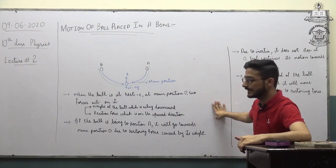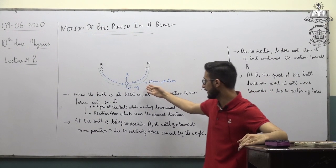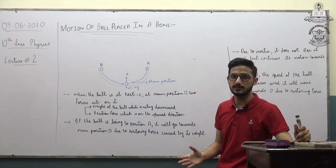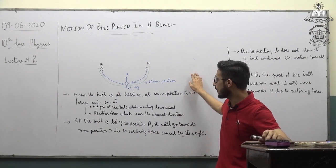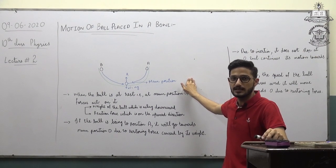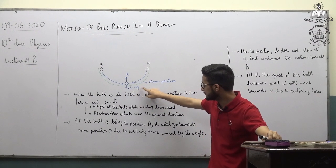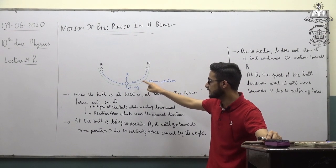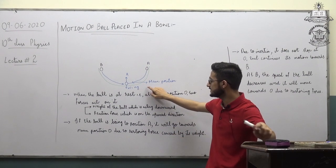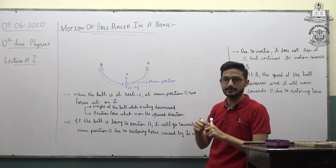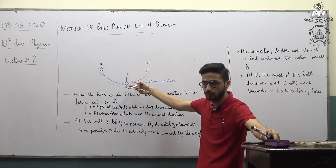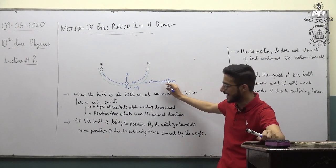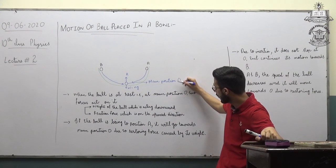In this system, first of all we will see what components we have. First, we have a bowl, and we have a ball placed inside it. We will first discuss the mean position. The mean position is that position where the body is at rest. As you can see, position O is the mean position because at this position the body is at rest.